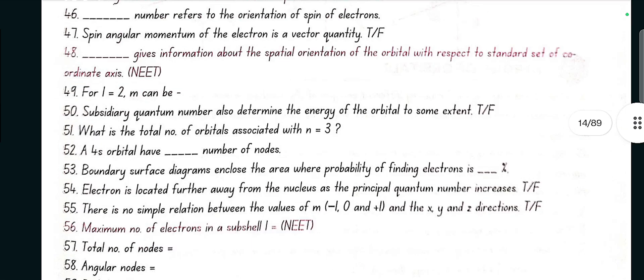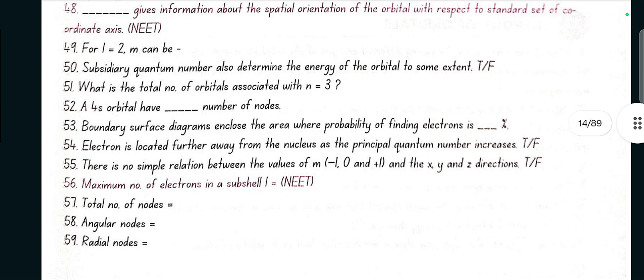For l equal to 2, m can be plus 2, plus 1, 0, minus 1, and minus 2. Subsidiary quantum number also determines the energy of the orbital to some extent, yes true. What is the total number of orbitals associated with n equal to 3? Total number of orbitals is n square, so 3 square is 9. A 4s orbital has 3 number of nodes. Boundary surface diagrams enclose the area where probability of finding electron is 90 percent.